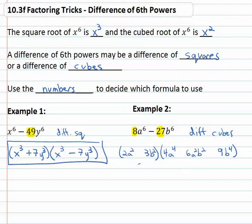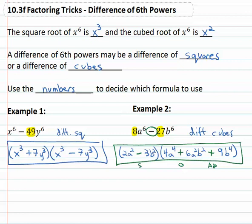For signs we think about SOAP: same sign as the problem, opposite sign as the problem, and always plus. So we have factored this as a difference of cubes: two a squared minus three b squared, times four a to the fourth plus six a squared b squared plus nine b to the fourth.